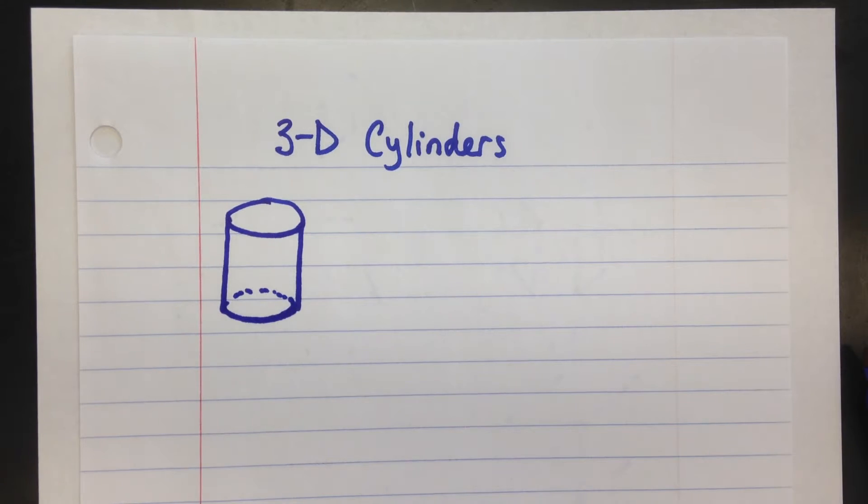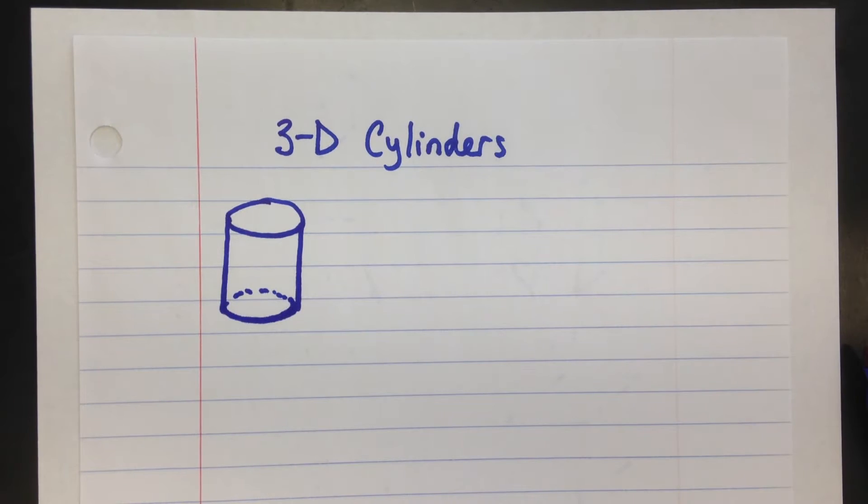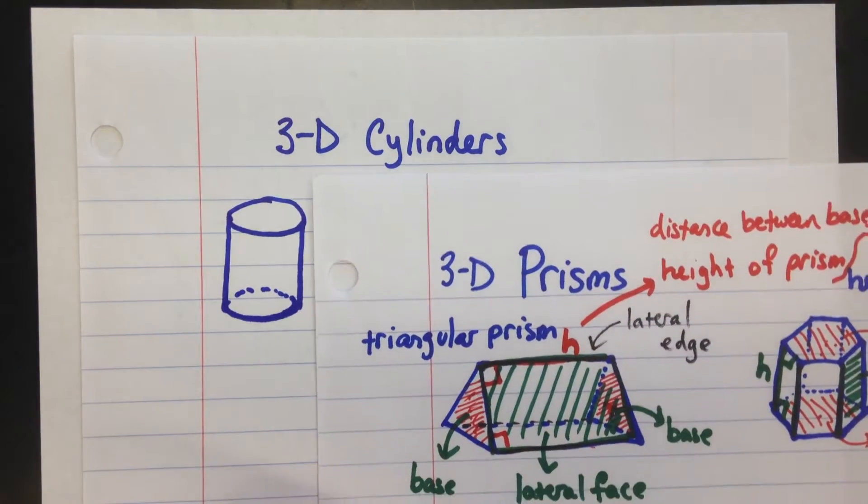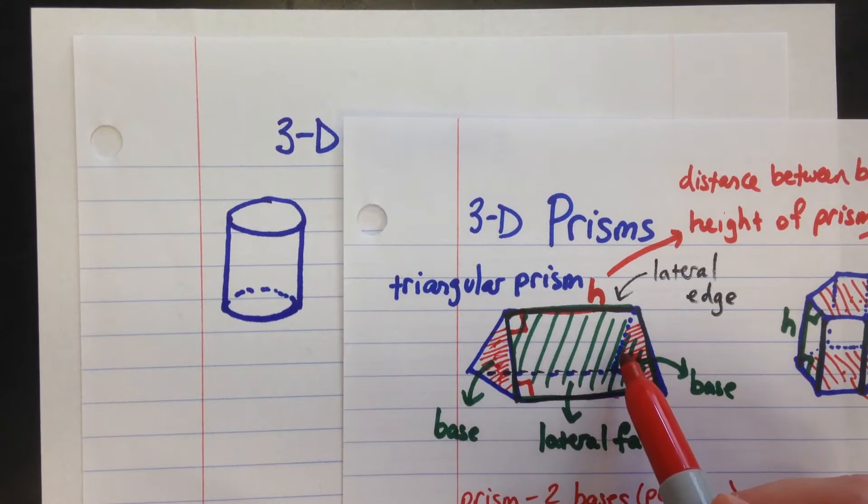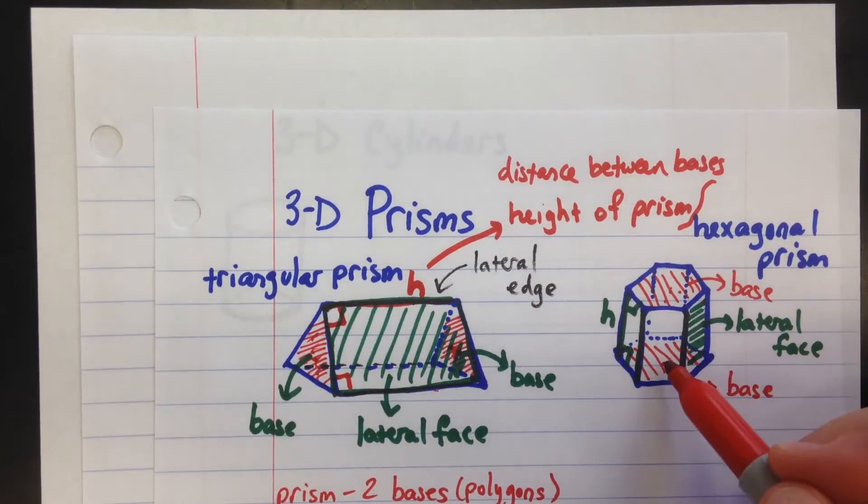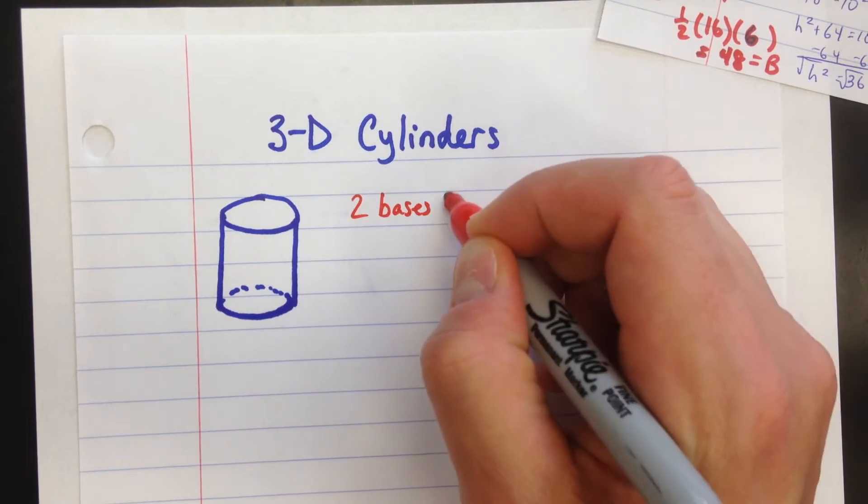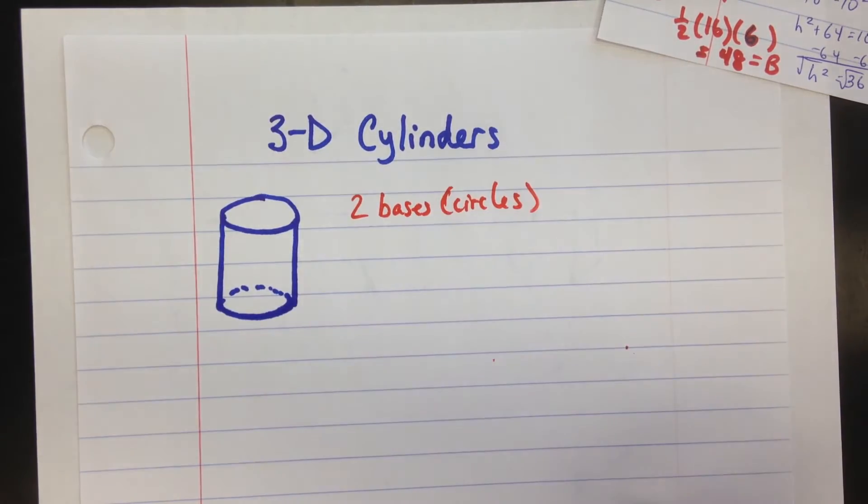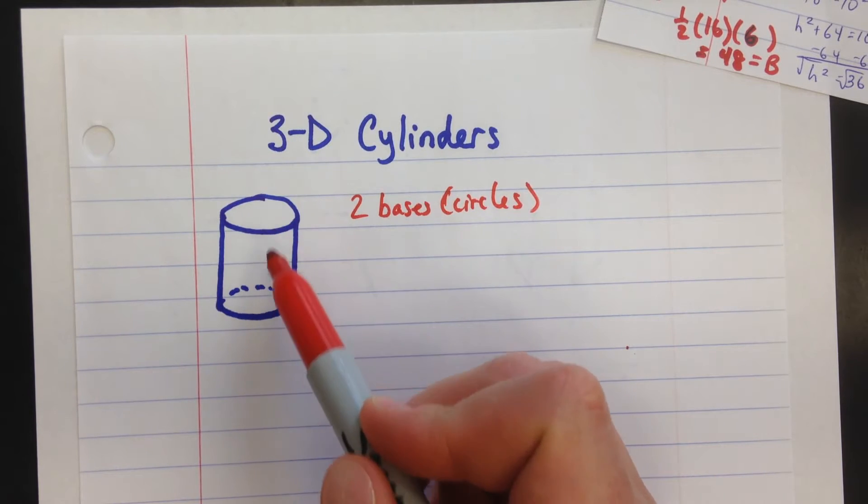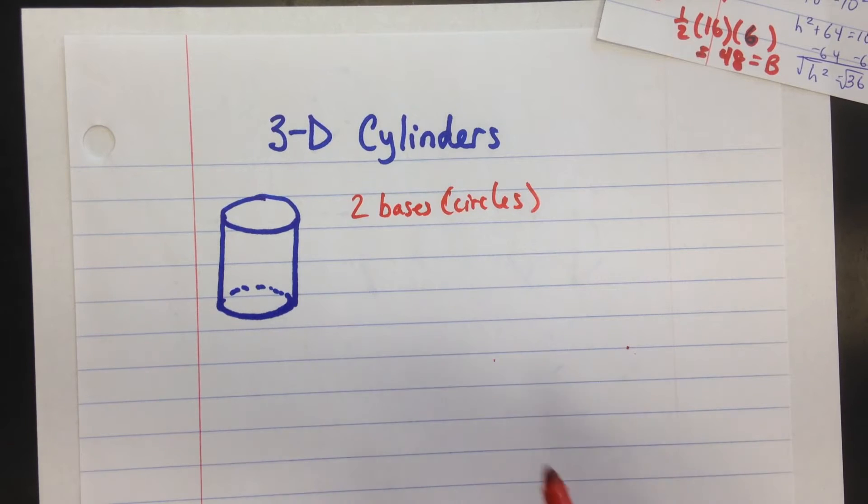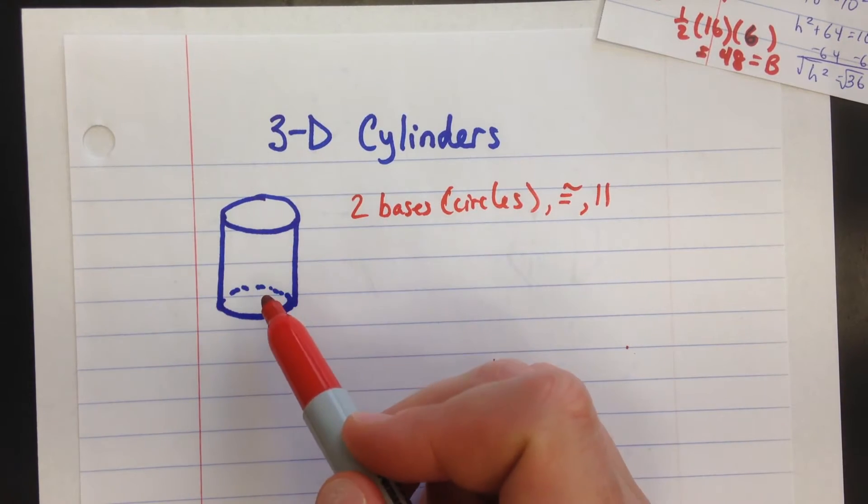One thing you're going to notice about a cylinder is that it's actually similar to a prism. A prism has two bases. A triangular prism has two bases that are congruent and parallel—left and right are the bases, or if it's hexagonal, top and bottom are the bases. Well, a cylinder has two bases. In this case, they're circles. So the only difference is that instead of being a polygon like a triangle, hexagon, rectangle, or trapezoid, this time the bases are circles. They are congruent and parallel to each other.